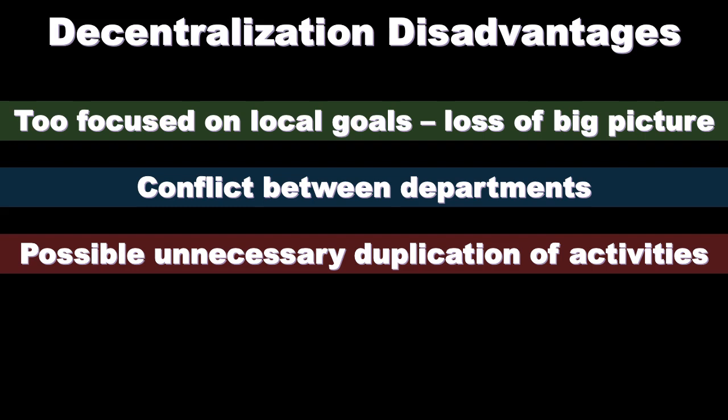A further disadvantage is the possible unnecessary duplication of activities. When decentralized, two different departments may repeat activities that could be handled in one centralized area. In a centralized system, those activities would be dictated and coordinated hierarchically. With decentralized departments making independent decisions, duplication can cause waste and inefficiency. A solution is to create a service department that performs the shared process and allocates those costs to the divisions.